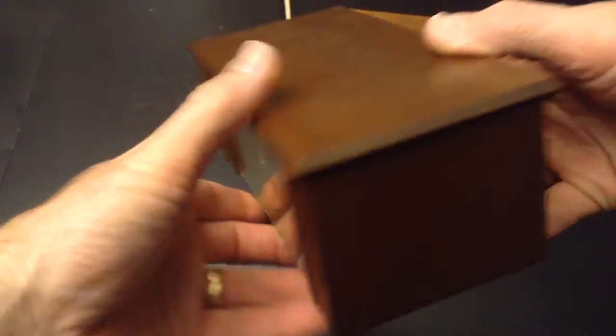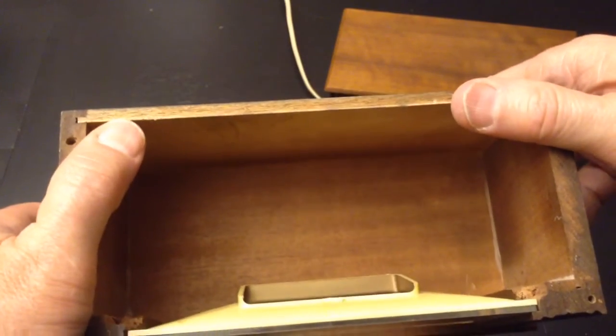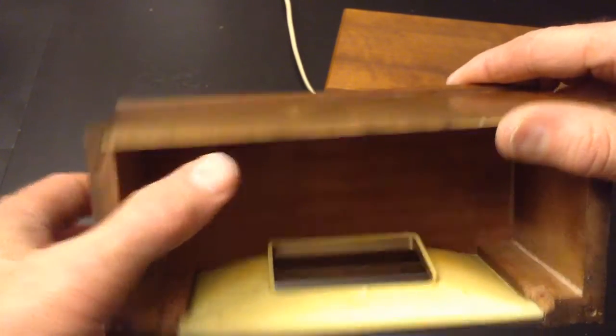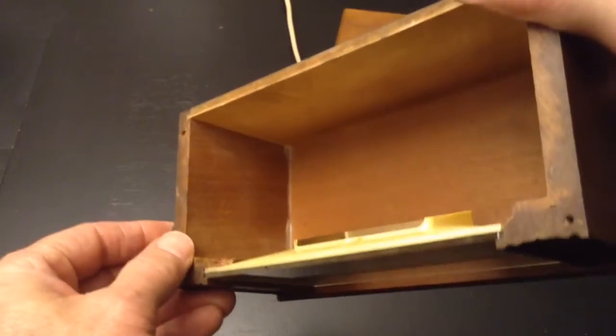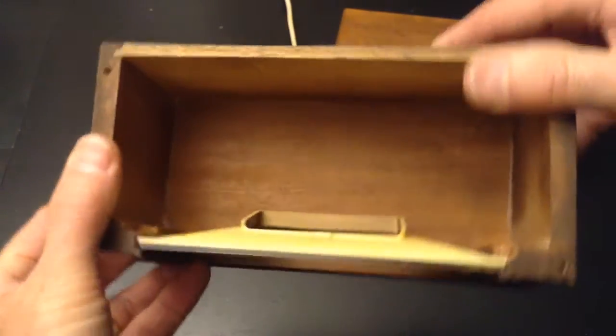So we look at the case, we'll see that the back is actually made out of plywood. You can see the layers right there. It's not necessarily bad, it's just interesting because the rest of the clock is made out of solid wood.